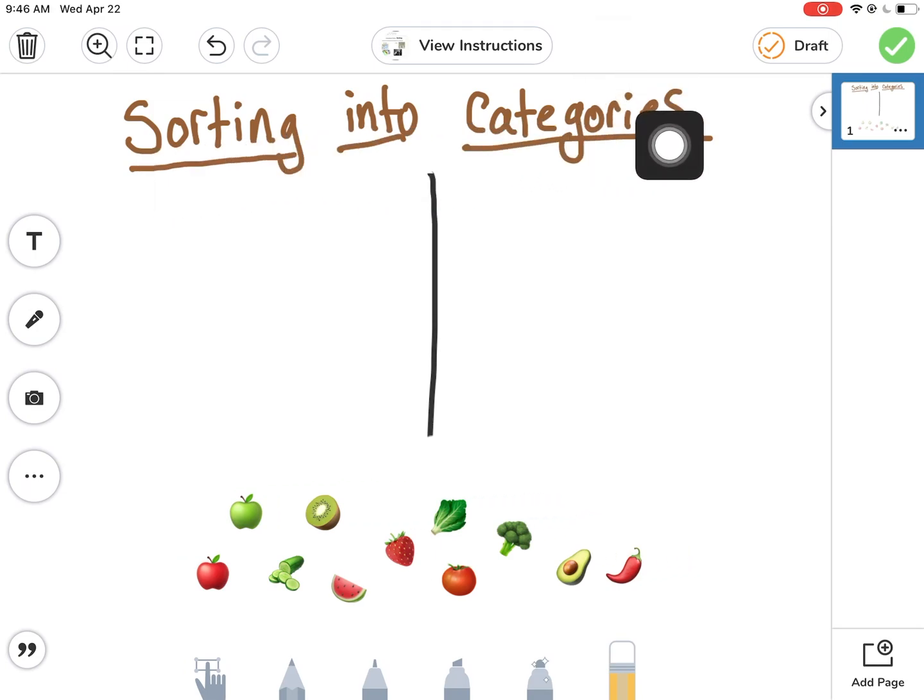We're still sorting into categories, but this time I brought a bunch of different emojis of fruits and vegetables. I don't have categories yet, so now I can decide how I want to do my categories.